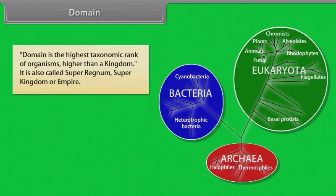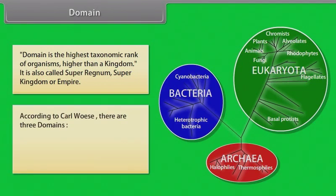Domain is the highest taxonomic rank of organisms, higher than a kingdom. It is also called super regnum, super kingdom or empire. According to Carl Woese, there are three domains: Archaea, Bacteria, and Eukaryota.